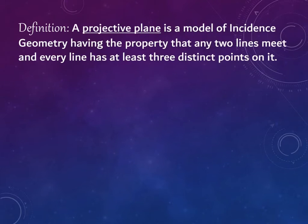That would be a problem. That is not an affine plane because that is not the Euclidean parallel postulate. There are many lines, many sets that each card could still belong to that did not include the three cards in your hand. The other definition that we're going to look at is a projective plane. A projective plane is a model of incidence geometry having the property that any two lines meet, and every line has at least three distinct points on it.